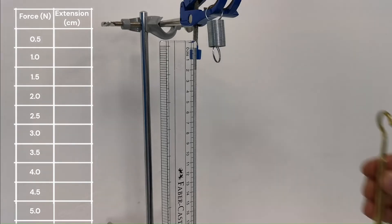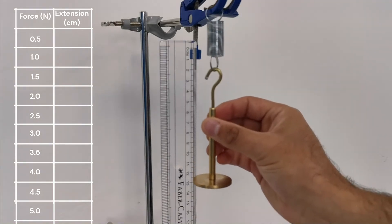We'll start adding masses to the spring and record the extension each time. We'll show the results in a table on the screen.